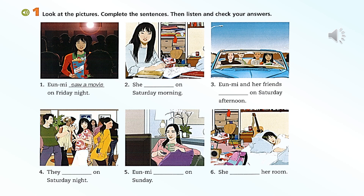Page 78, Language Practice. Look at the pictures, complete the sentences, then listen and check your answers. One: We saw a movie on Friday night. Two: She did her homework on Saturday morning. Three: We took a trip on Saturday afternoon. Four: They went to a party on Saturday night. Five: We stayed home on Sunday. Six: She didn't clean her room.